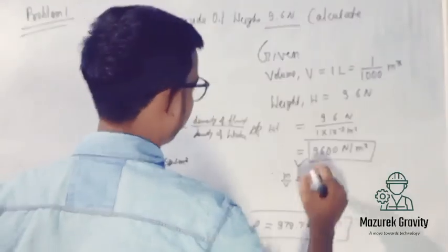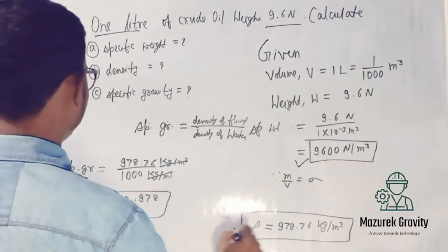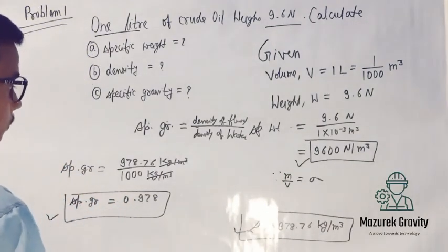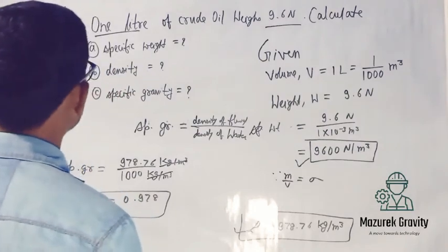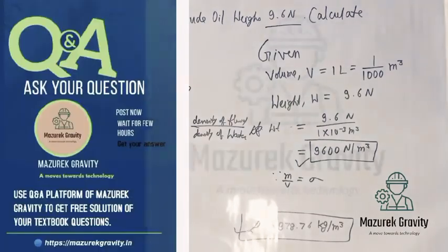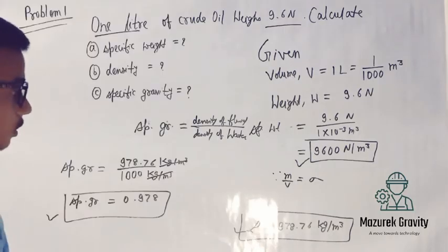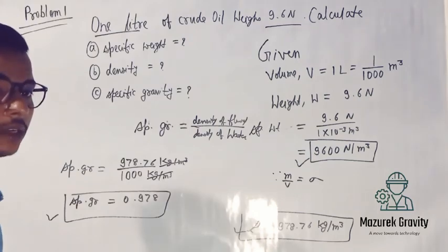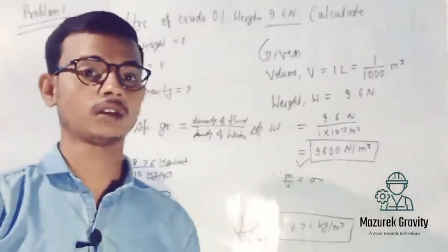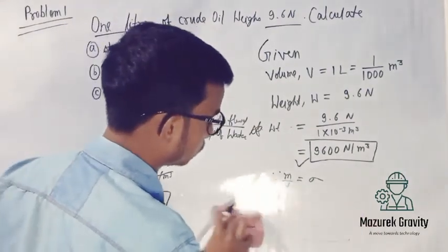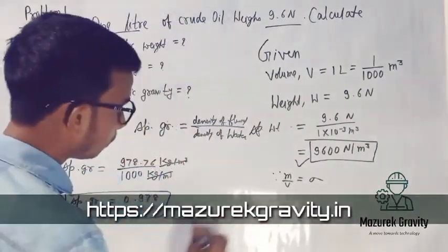So we have found the specific weight, density, and specific gravity. In the next video we will solve problem number 2. If you have any problem from fluid mechanics chapter 1, you can visit our website — measuredgravity.in. You will find the link in the description box.